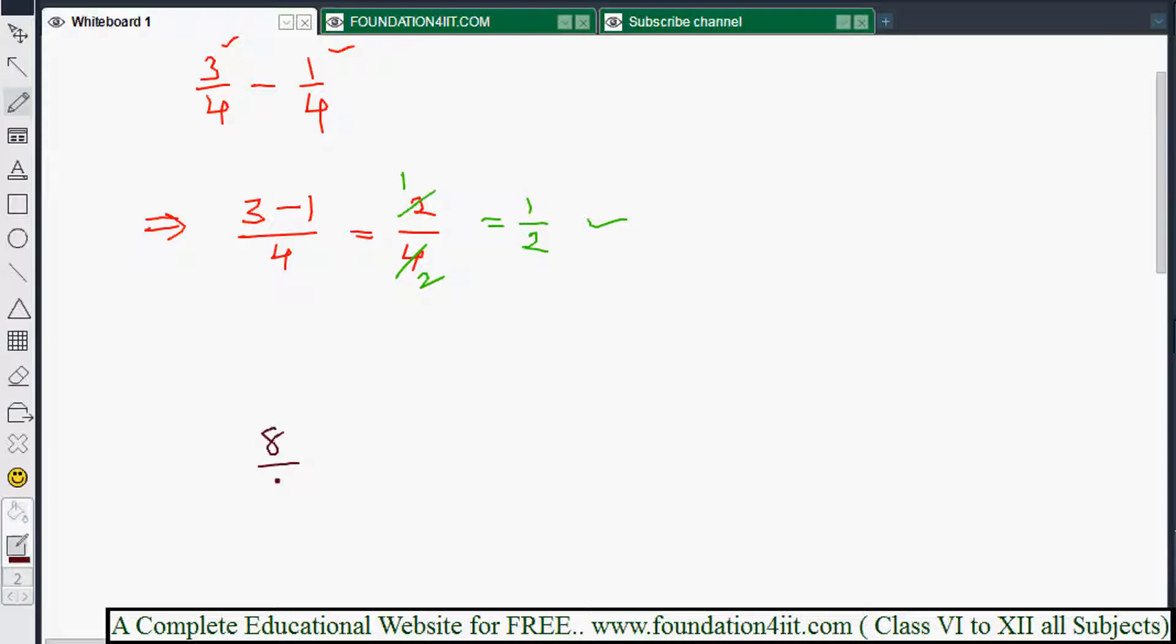8 by 9 minus 3 by 9. Now what you'll do here: directly subtract the numerator because denominators are the same. We don't need the cross method. We directly subtract the numerator when denominators are the same.